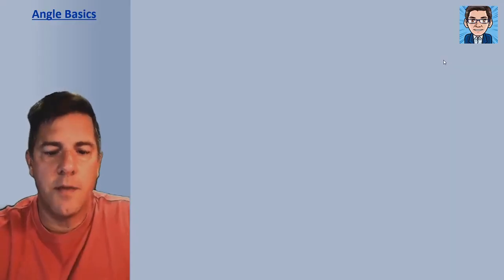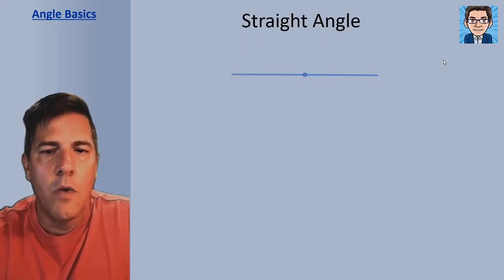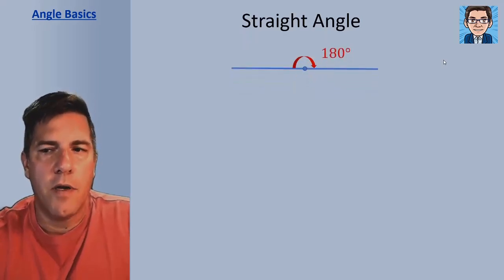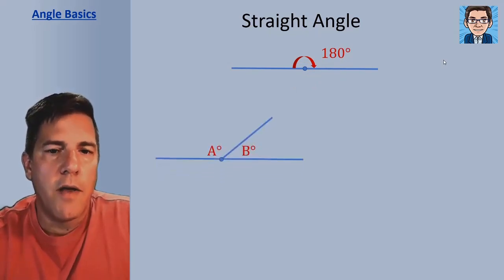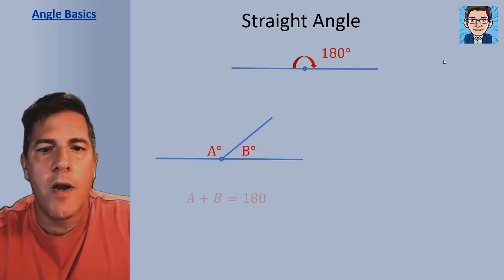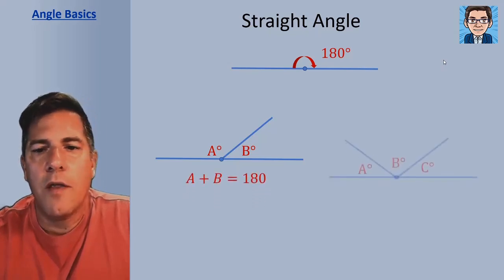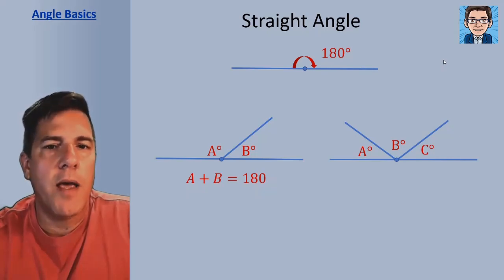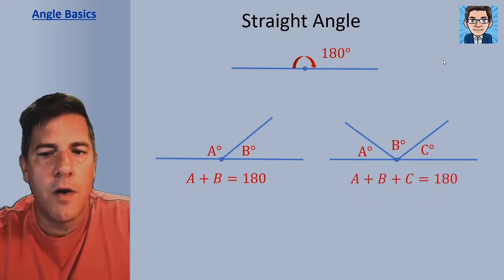A straight angle or a line is going to be 180 degrees. So any two angles that form a straight line, like A and B here, are going to add up to 180 degrees. Or any three or more angles — as long as they add up to a straight line, like A, B, and C together, that's going to be 180 degrees when you add those three together.